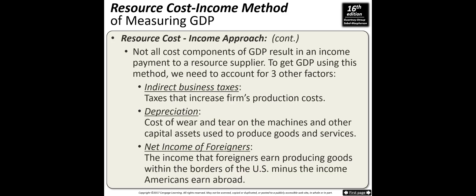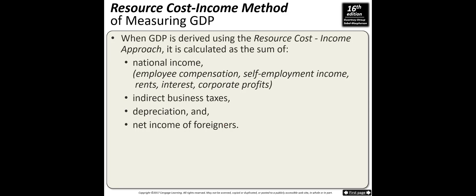Not all cost components of GDP result in an income payment to a resource supplier. To get GDP using this method, we need to account for three other factors: first, indirect business taxes like sales tax, which increase firms' production costs; second, depreciation — the cost of wear and tear on machines and other capital assets used to produce goods and services; and third, net income of foreigners — the income that foreigners earn producing goods within U.S. borders minus the income Americans earn abroad.